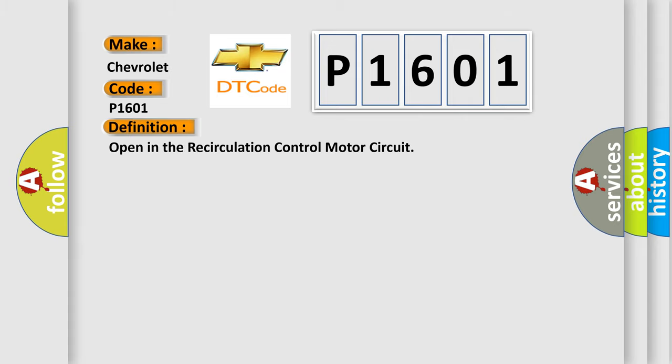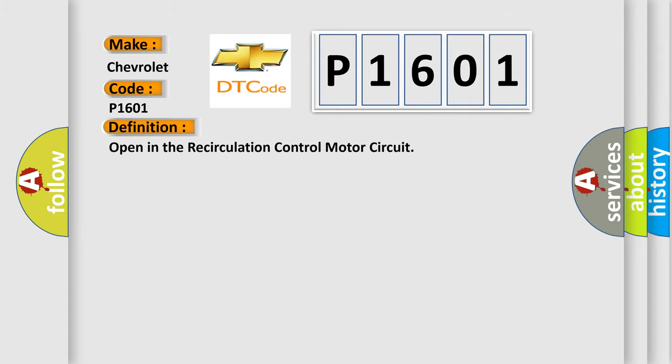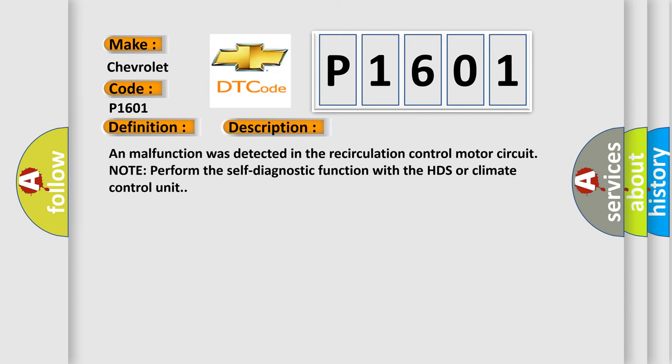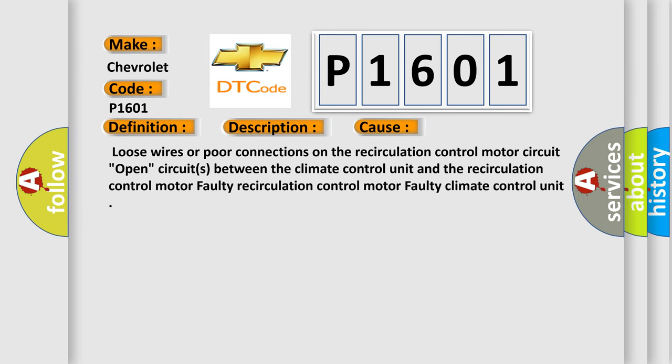The basic definition is: Open in the recirculation control motor circuit. A malfunction was detected in the recirculation control motor circuit. Note: Perform the self-diagnostic function with the HDS or climate control unit. This diagnostic error occurs most often in these cases: loose wires or poor connections on the recirculation control motor circuit, open circuits between the climate control unit and the recirculation control motor, faulty recirculation control motor, or faulty climate control unit.